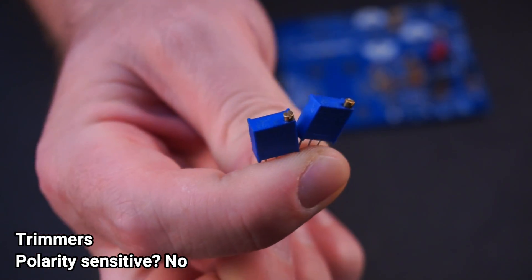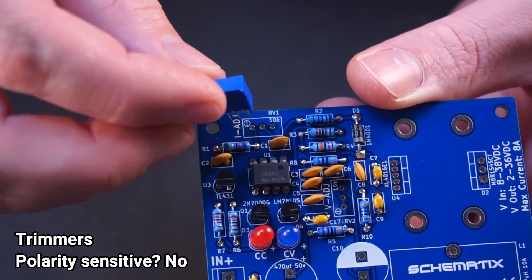Next I'll install the two trimmers. These trimmers are used to adjust the voltage and current.